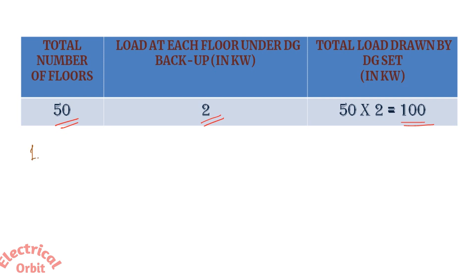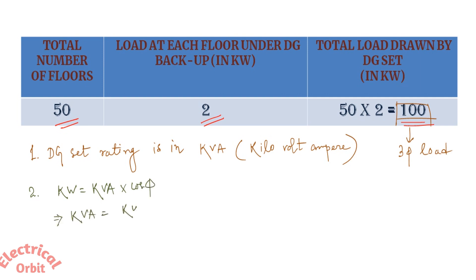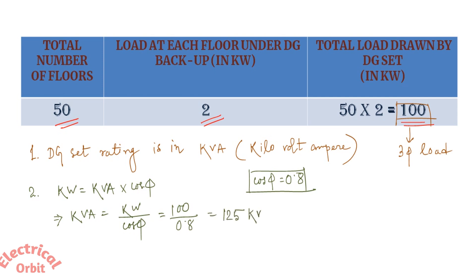The most important thing to remember is that DG set rating is in KVA (kilovolt-ampere). This 100 kilowatt load is your total three-phase load. The relationship is: kilowatt = KVA × cos φ, so KVA = kilowatt ÷ cos φ. The standard value of cos φ is 0.8. Therefore, 100 kW ÷ 0.8 = 125 KVA.